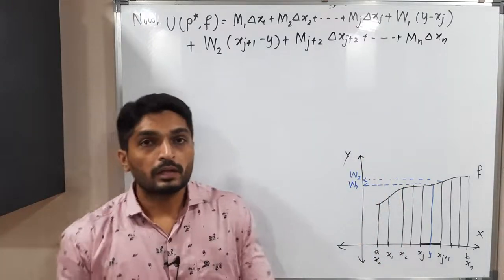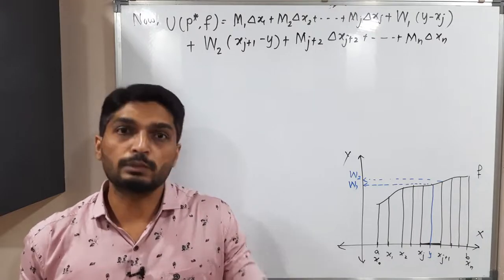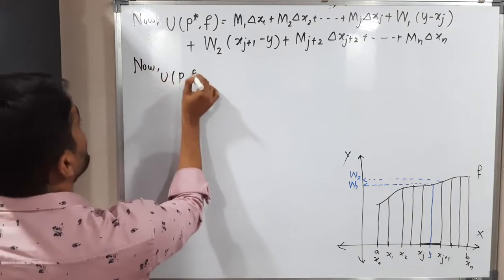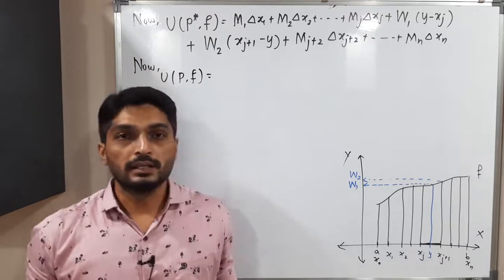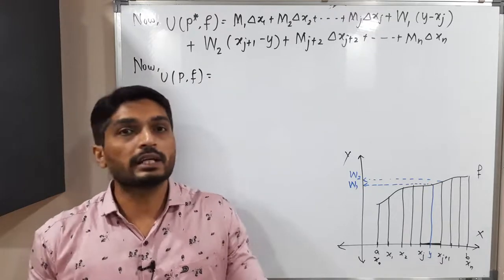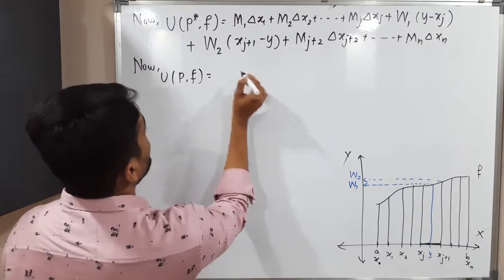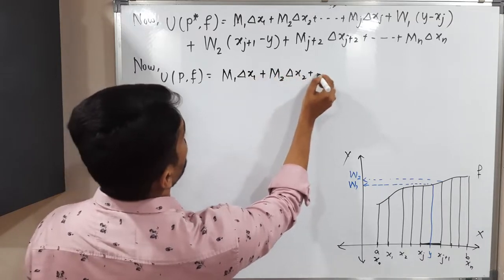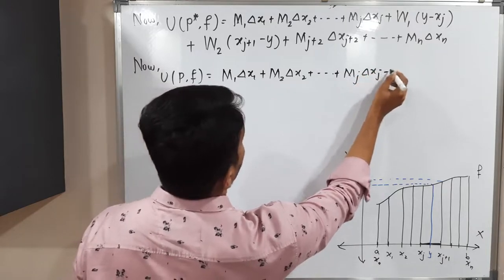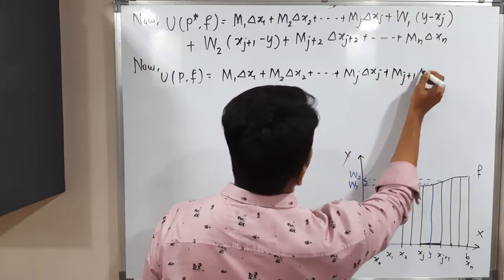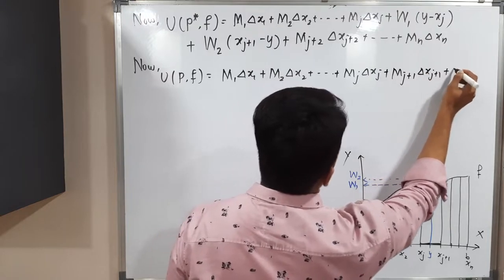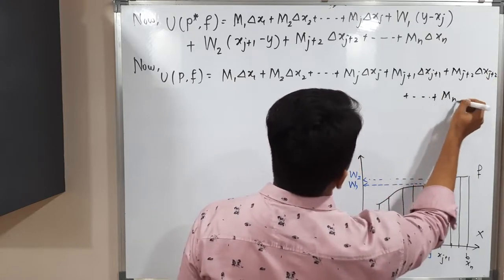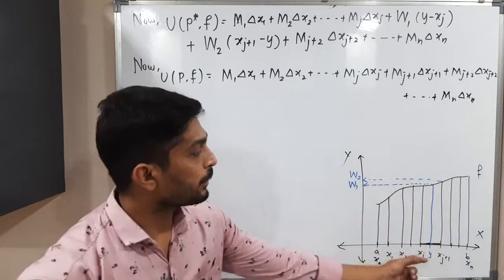Now let us write the upper sum with partition P. For partition P there is no point Y, so U(P, F) = M₁ΔX₁ + M₂ΔX₂ + ... + MⱼΔXⱼ + Mⱼ₊₁ΔXⱼ₊₁ + Mⱼ₊₂ΔXⱼ₊₂ + ... + MₙΔXₙ. Since there is no point Y, we directly write Mⱼ₊₁ΔXⱼ₊₁ and so on.